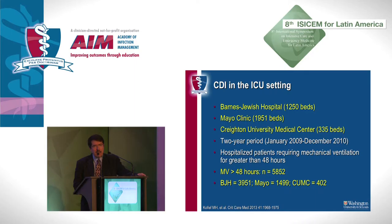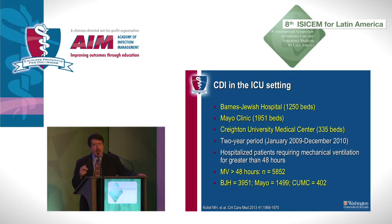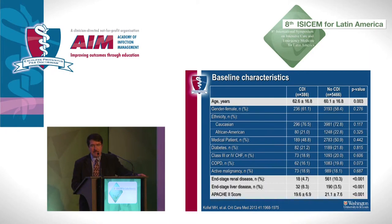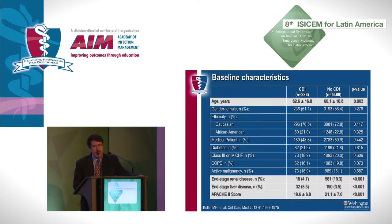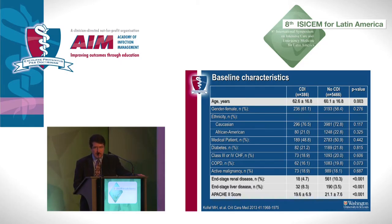We carried out a study a few years ago — the largest study done in the intensive care setting — between Barnes-Jewish Hospital in St. Louis, the Mayo Clinic, and Creighton University. We looked at patients who had C. difficile infection while on mechanical ventilation for at least 48 hours, with almost 6,000 patients enrolled. As you can see, 386 patients — roughly about 7 percent — actually developed C. difficile infection, which was the prevalence of C. difficile in this critically ill population.